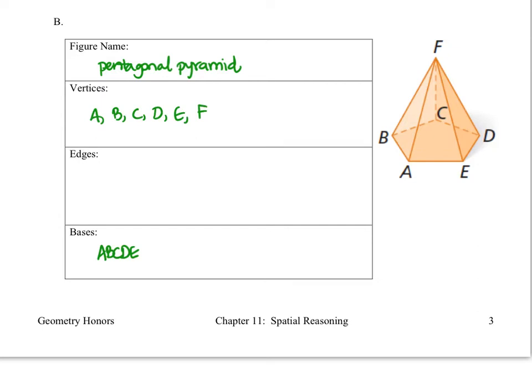Last of all, we're going to name all of the edges. And we'll start with the base and segment AB. Then we have segment BC, segment CD, segment DE, segment EA. And then we have to go from the base towards the vertex. So we're going to have segment AF, segment BF, segment CF, segment DF, and segment EF. And that's it for this question.